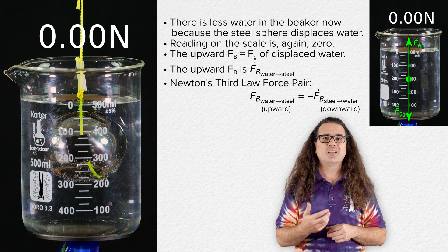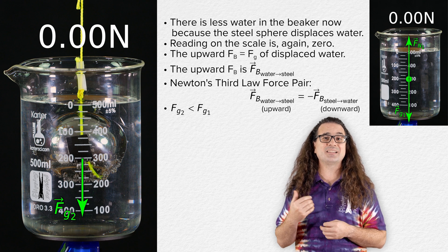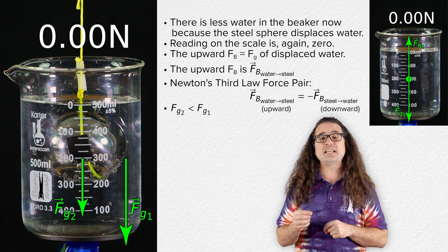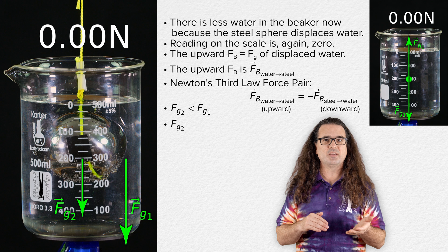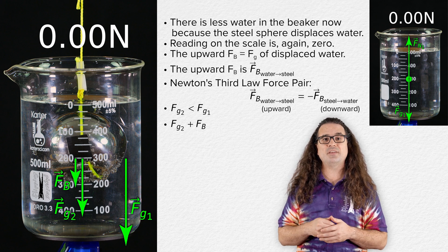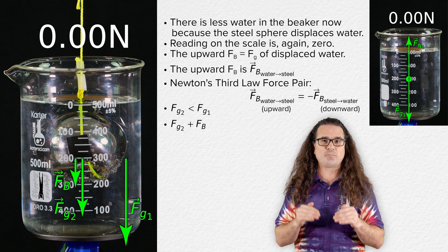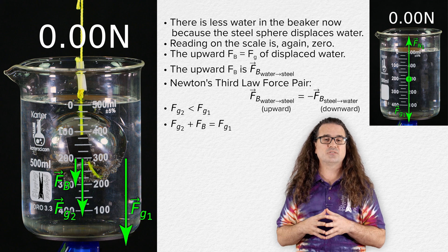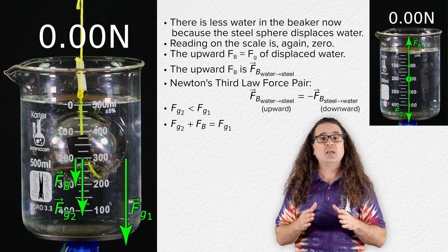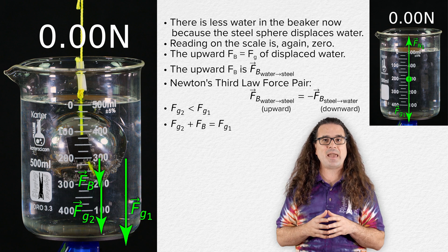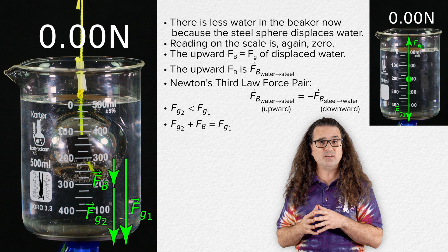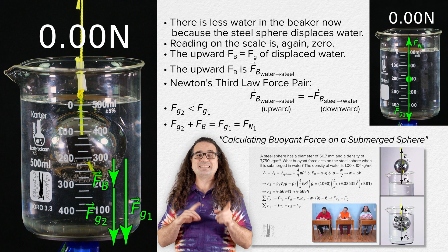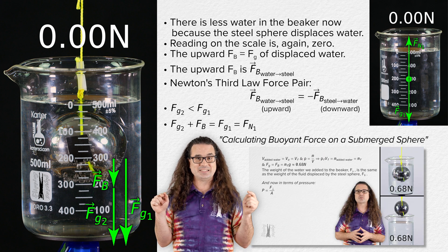Because there is less water in the beaker, this second force of gravity acting down on the beaker and water is less than force of gravity one when there was more water in the beaker. With the steel sphere in the water, the downward force of gravity on the beaker and on the water — force of gravity two — plus the downward buoyant force from the steel sphere on the water, are equal in magnitude to the force of gravity on the beaker and the water without the steel sphere, force of gravity one. It is because force of gravity one equals force of gravity two plus the buoyant force that the reading on the scale is again zero. Link to the full lesson is in the description.